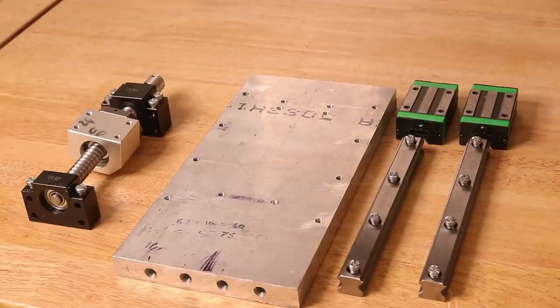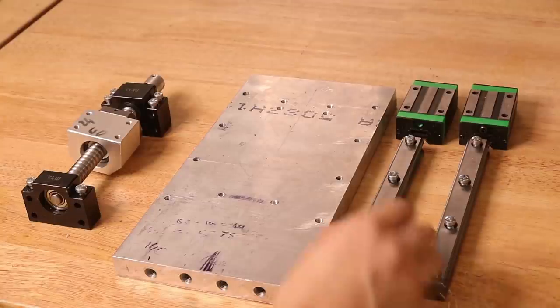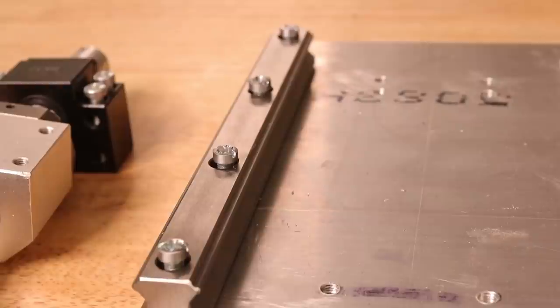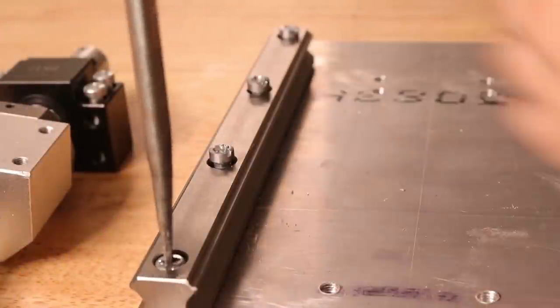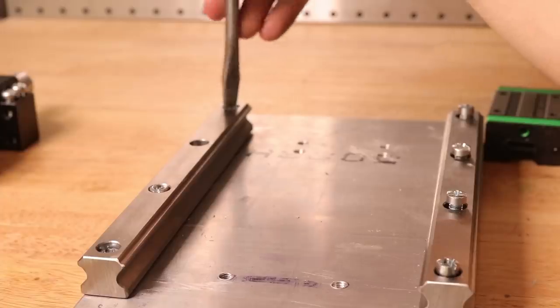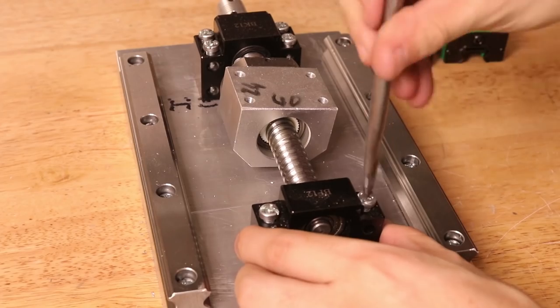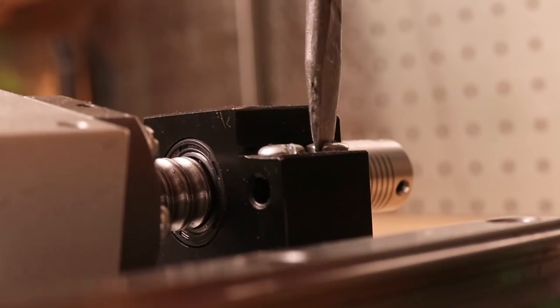I went and bought some decent linear rails on the internet, and I mounted them to a piece of three quarter inch aluminum. Despite not being a proper name brand kit, the linear rails and ball screws work really great for the price that I paid.